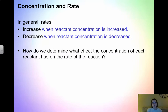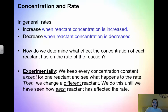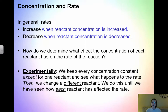The main question for this video is: how do we determine what effect the concentration of each reactant has on the rate? We always have to determine the effect experimentally. In order to determine the rate law, we have to run experiments. We keep every concentration constant except for one reactant, and then we see what happens to the rate. Then we change a different reactant, keeping the others constant, and we do this until we've seen how each individual reactant affects the rate.